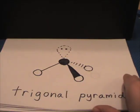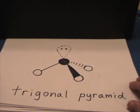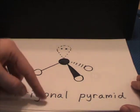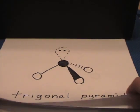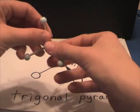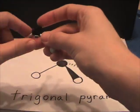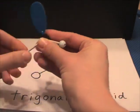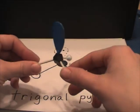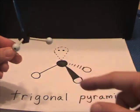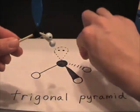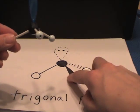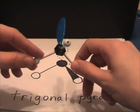If one lone pair and three bonds are around the central atom, we call this a trigonal pyramid. Looking at the model, one of these electron regions or densities is a lone pair. It looks like a pyramid — one bond is coming out towards you and one is going back away from you, so we use dashes and wedges, and a regular line means it's on the same plane.